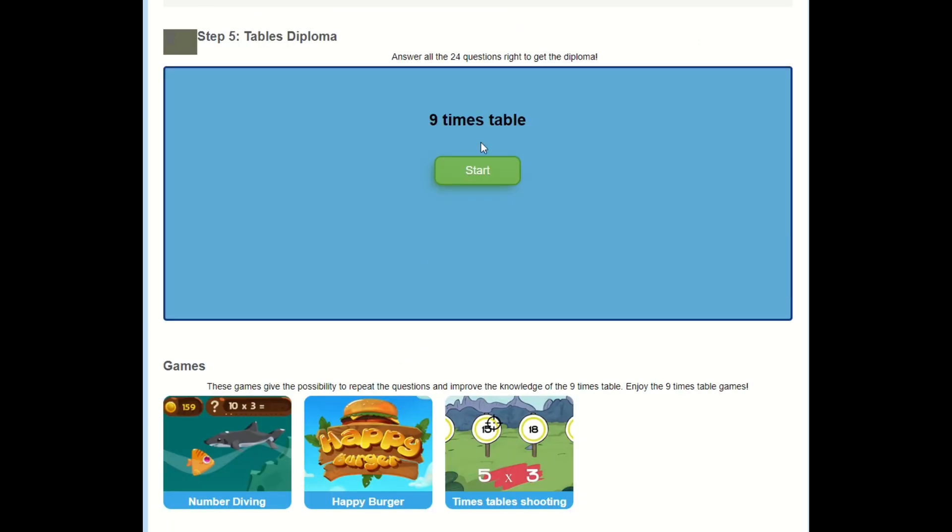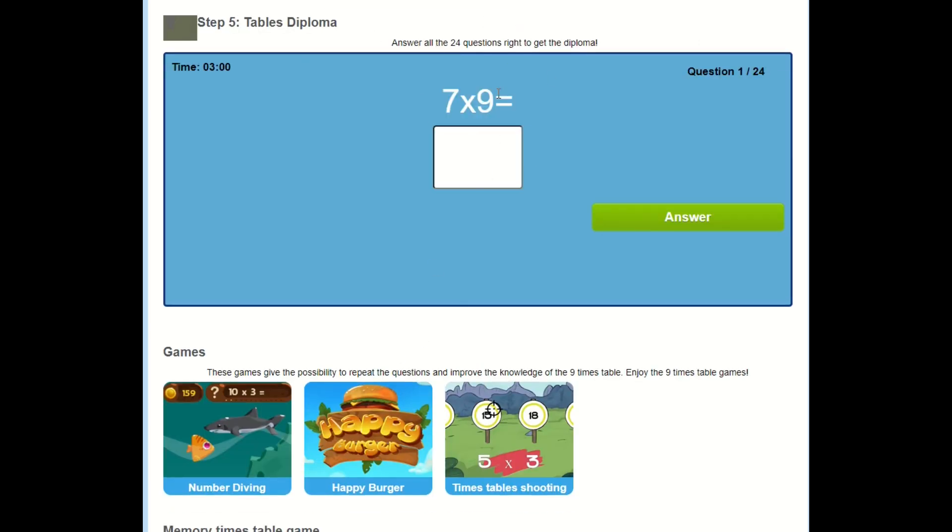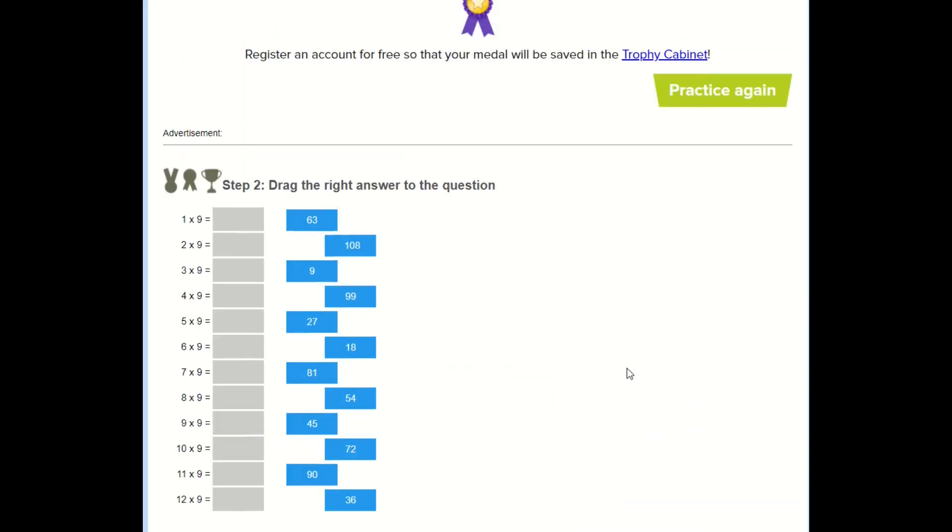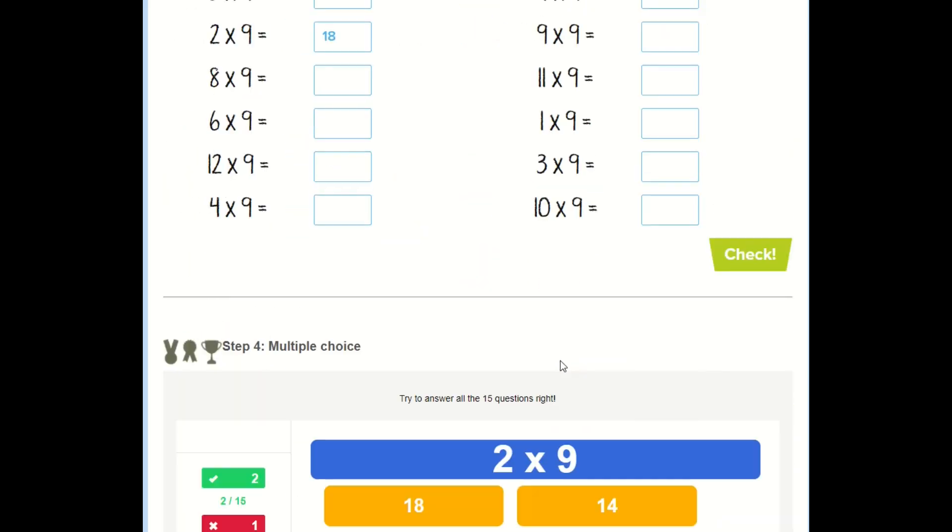And finally I have to get all of these questions, all 24 of them correct to earn my diploma to have finished this. I've got three minutes to fill these in. When I've typed out my answer I'd click that to move on to the next one. Have a go yourselves. Remember you can go back and practice as many times as you need to before you move on to your questions today.